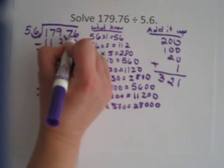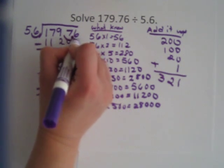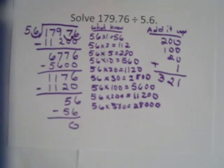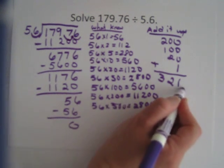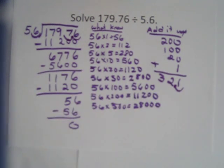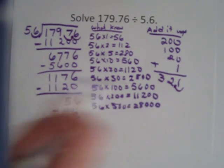But I still now, I still have one decimal left over. So in my answer, I am going to have one number after my decimal. So my answer to this problem should be 32 and 1 tenth.